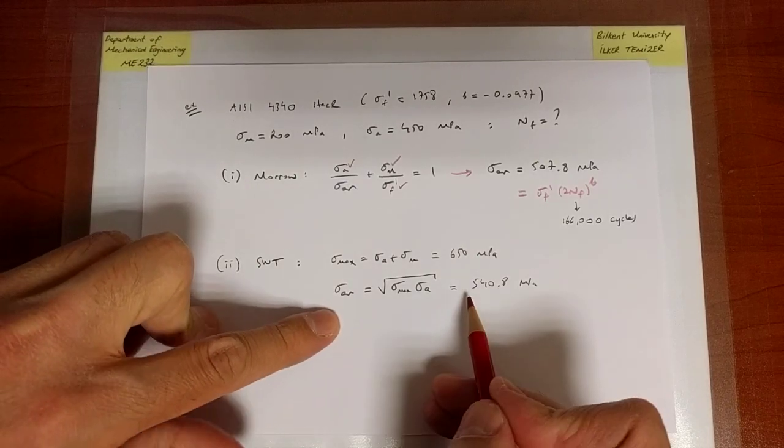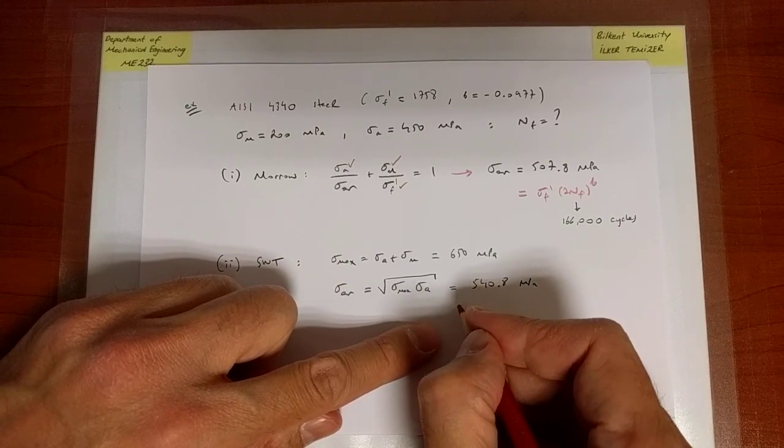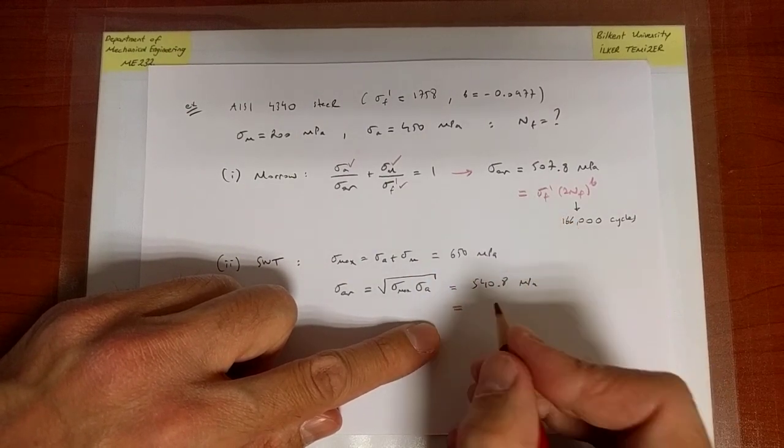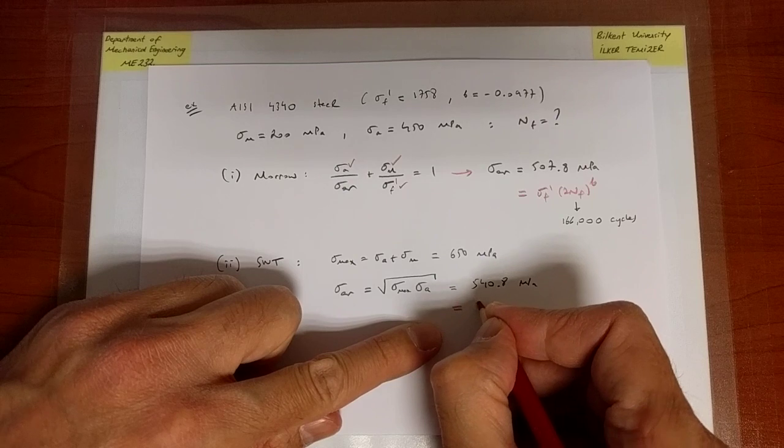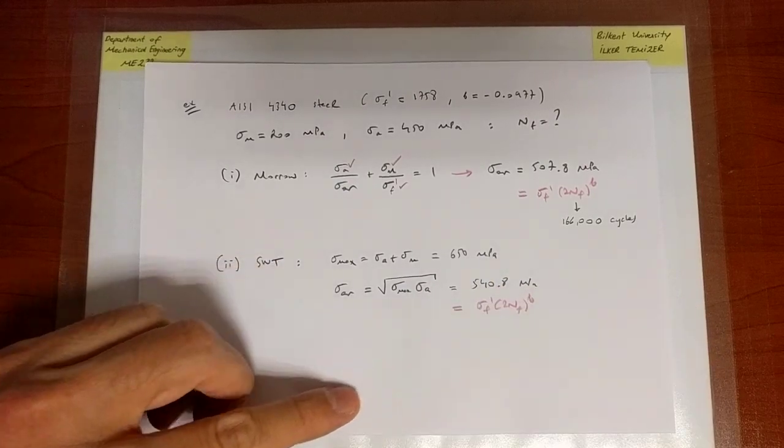Notice that it's larger than this value of 450 for the same reason. And now, with this equivalent completely reverse stress amplitude, I can predict the number of cycles to failure. The Basquian equation still holds.